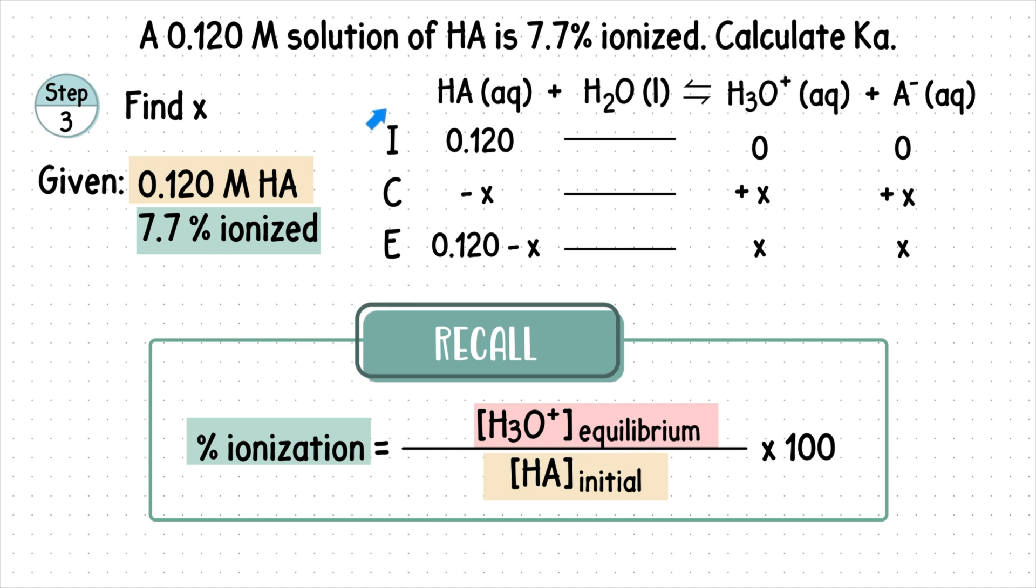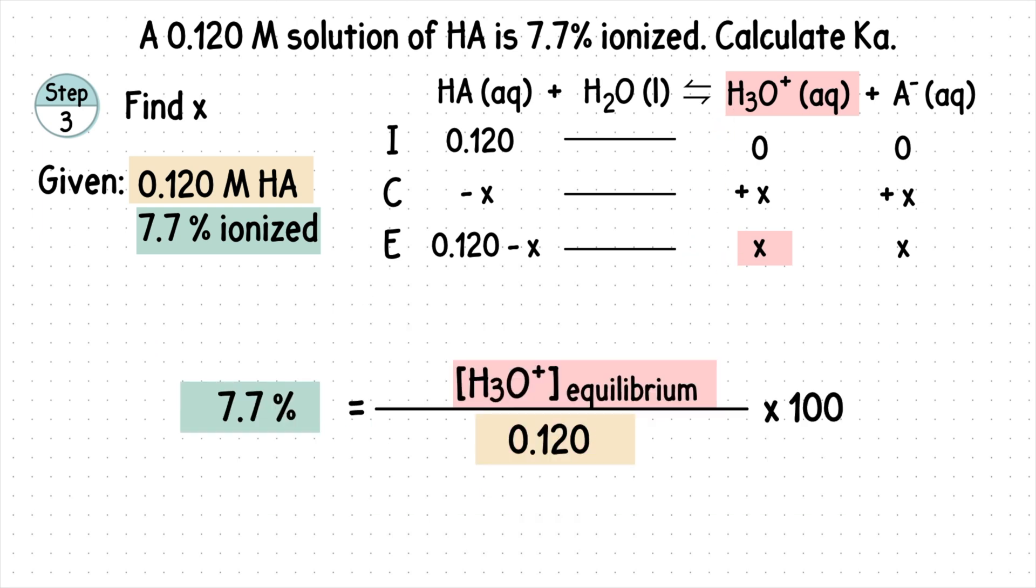Looking back at our ICE table, the hydronium ion at equilibrium is X. By plugging everything into our formula, this is how we will find X.